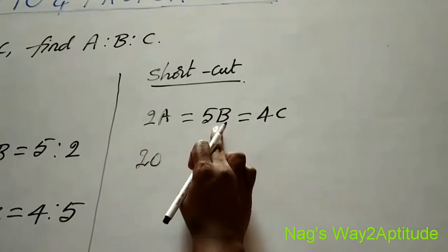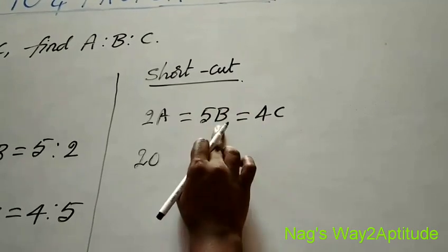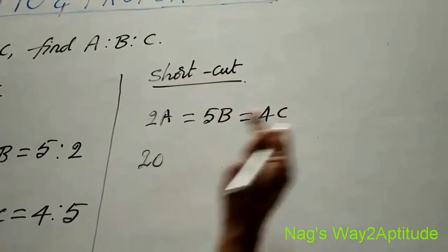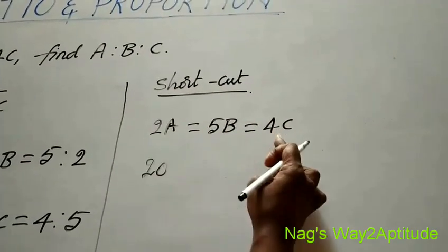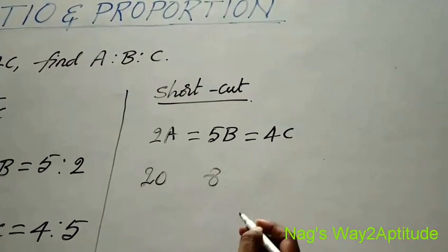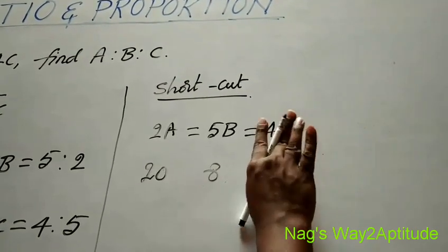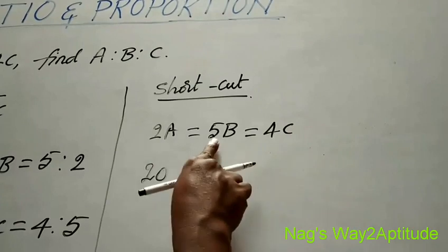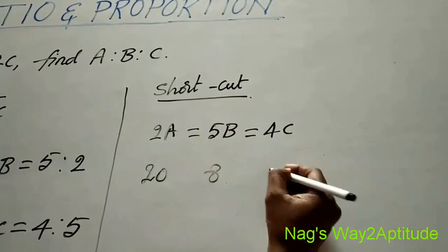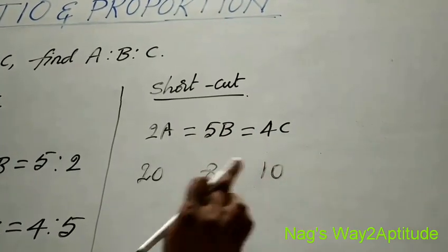Now for the b term, you leave 5b and multiply the other two: 2×4 are 8. And finally for the c term, you leave 4c and multiply the other two: 2×5 are 10. So we got 20 is to 8 is to 10. Cancelling 2: 20÷2=10, 8÷2=4, 10÷2=5. So a is to b is to c is 10 is to 4 is to 5. This is the shortcut method.